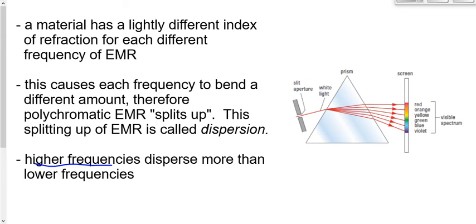Higher frequencies — violet — will disperse or refract the most. Lower frequencies — red light — will refract or disperse the least. My suggestion: don't just memorize this, because you'll mix up frequency with wavelength. Instead, picture the diagram of the prism on the board. If you can visualize it with your eyes closed, then you know red light refracts less, so low frequencies refract less than high frequencies. You don't have to memorize anything beyond having that picture in your head.